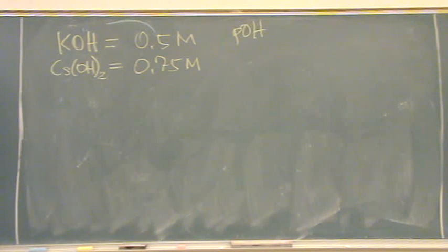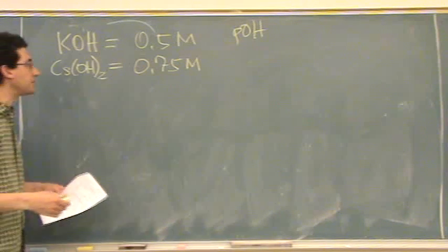There's no ICE table here, why? Strong components. Yeah, they're strong. So you don't use ICE tables when they're strong.